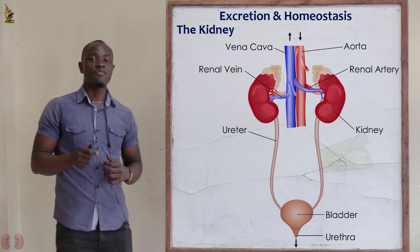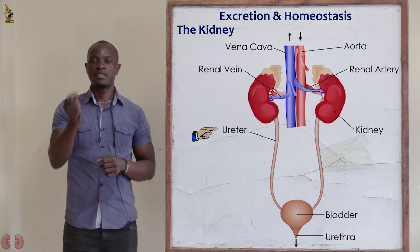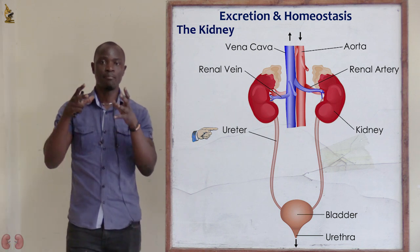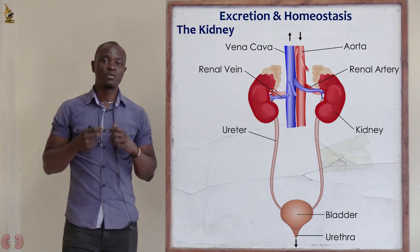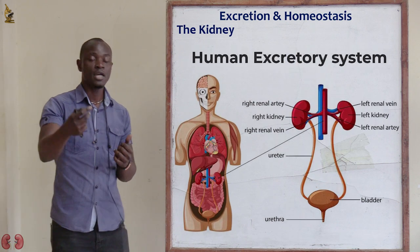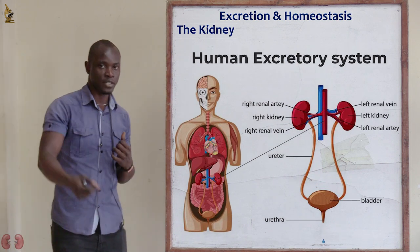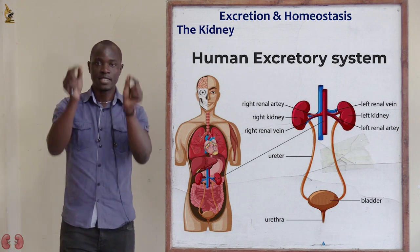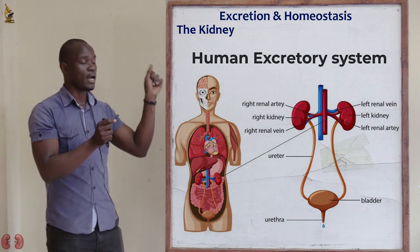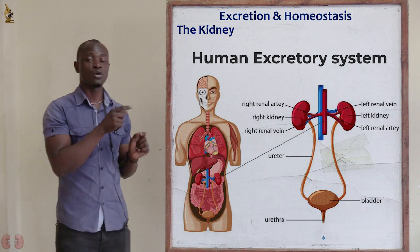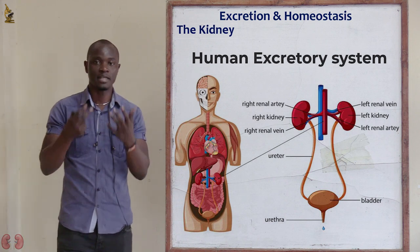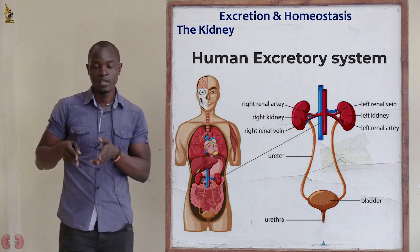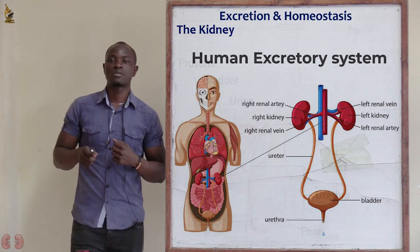From the kidney there is a tube called the ureter. Urine from the kidney travels through the ureter, which is connected to the urinary bladder. The urinary bladder is then connected to the urethra, which opens to the outside in order to release urine to the surroundings through the process of excretion.